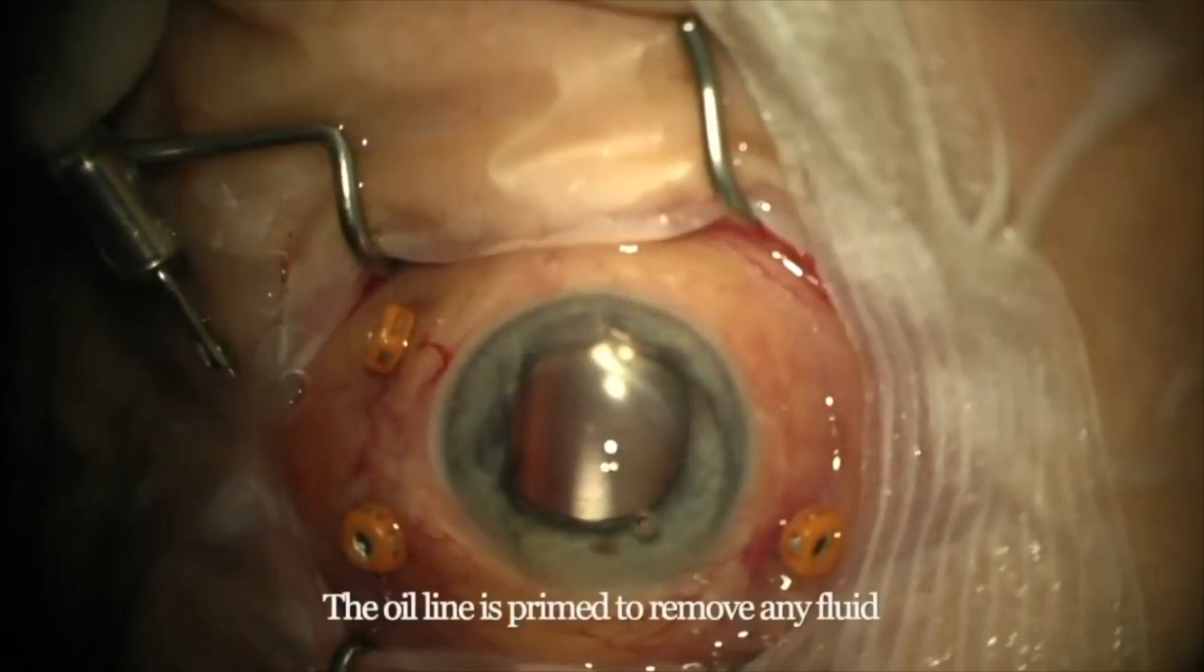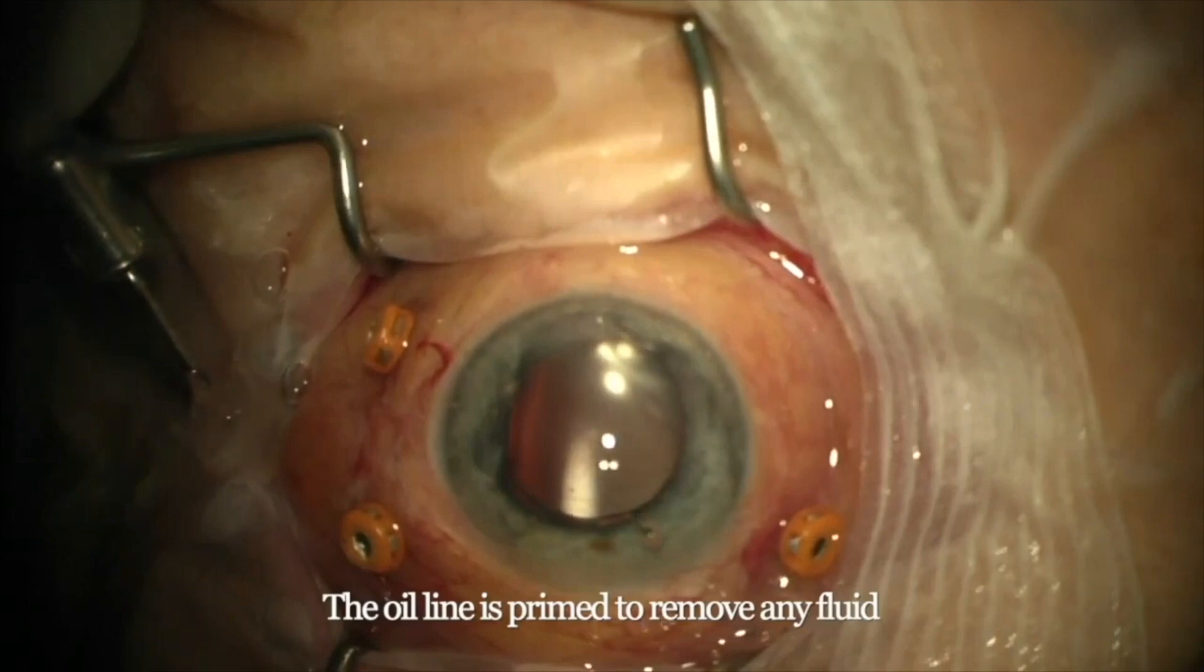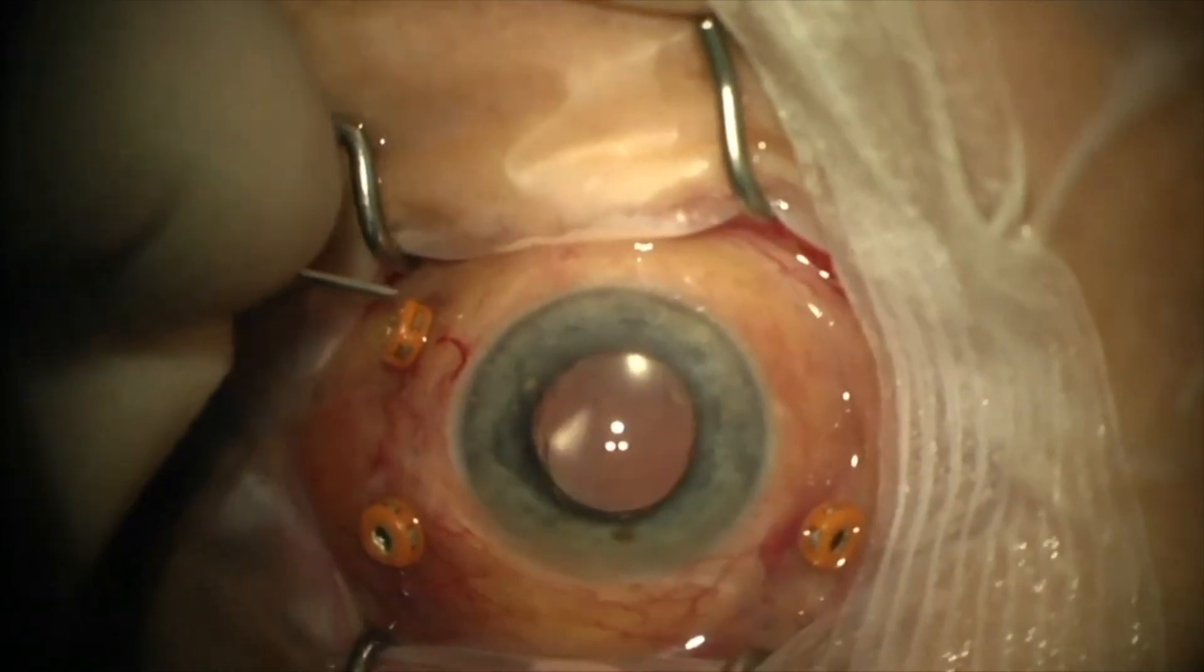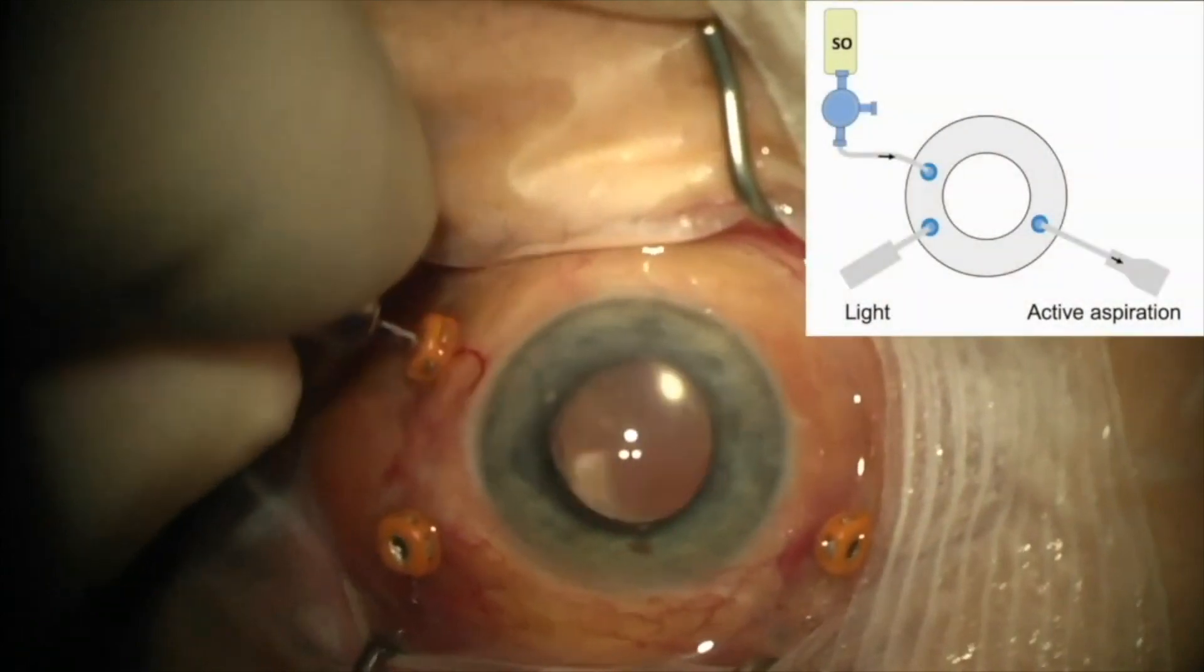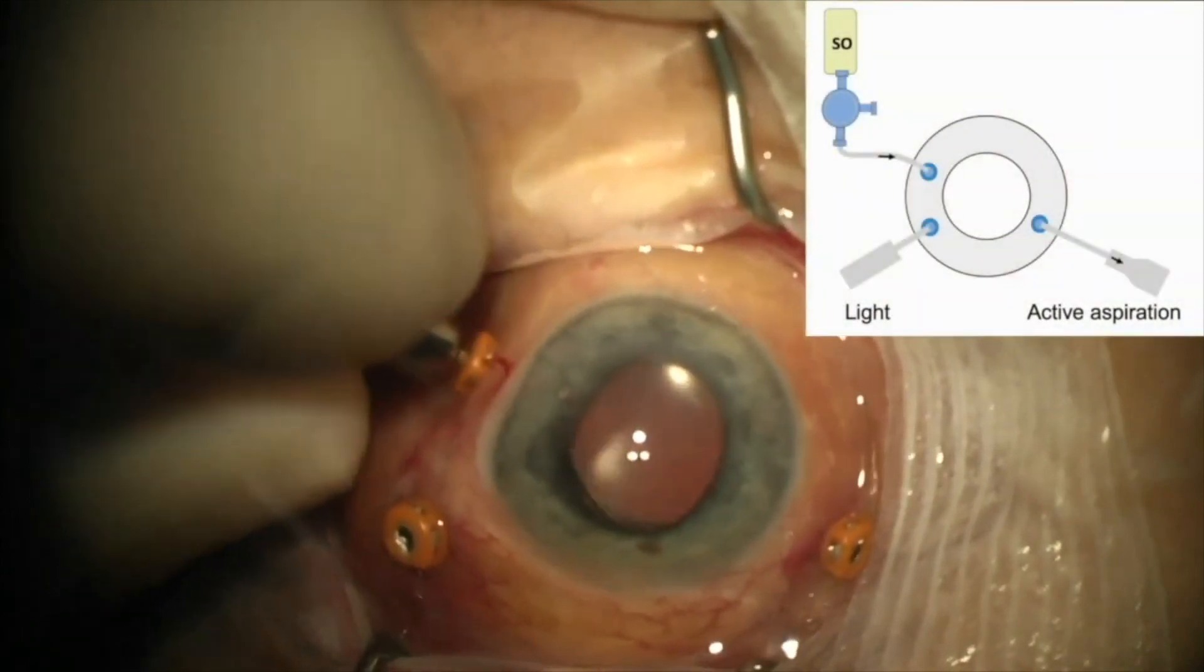We start in any silicone oil exchange by priming the infusion cannula with silicone oil, then putting back in the eye. The photograph insert shows the rest of the setup with the active extrusion and the light pipe inserted through the superior trockers.